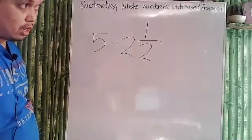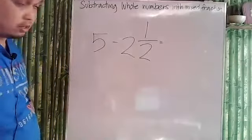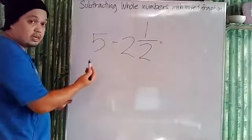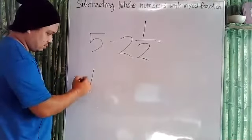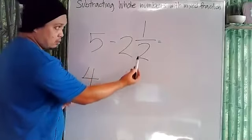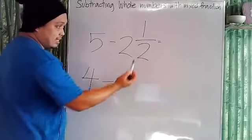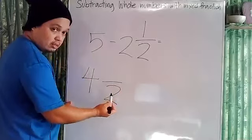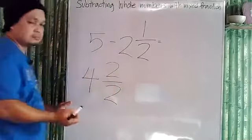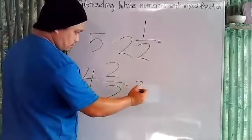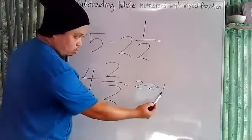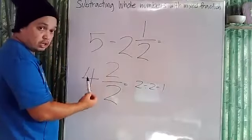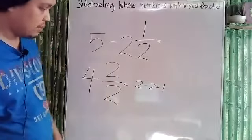We are subtracting a whole number from a mixed fraction. First, change the whole number into a mixed fraction. Borrow one from five — five minus one is four. Follow the denominator, which is two, so the numerator must also be two, because two divided by two equals one. One plus four is five, so four and two-halves equals five.